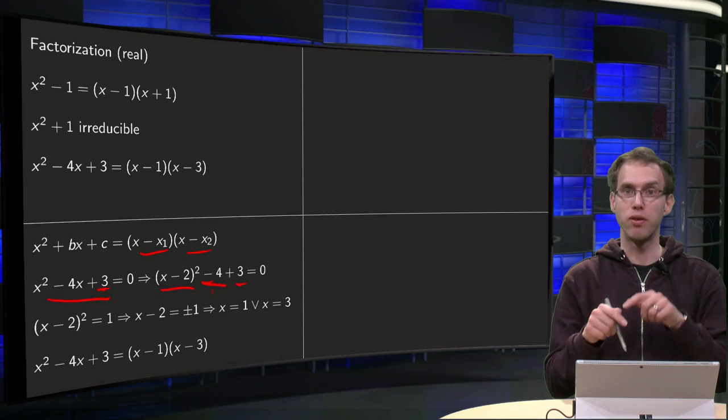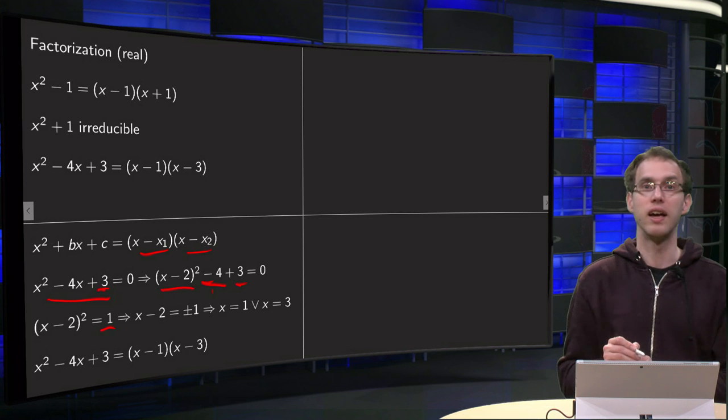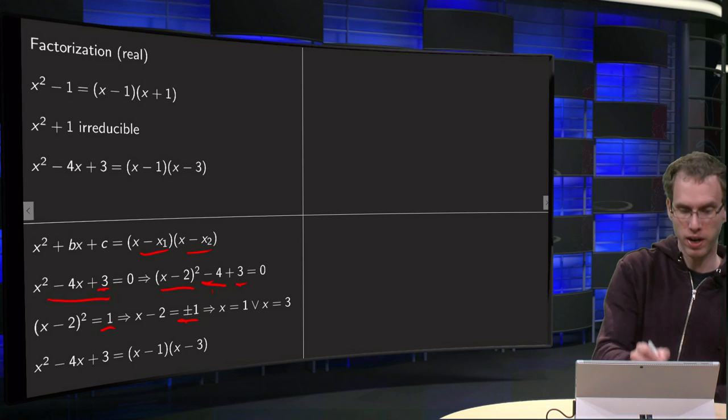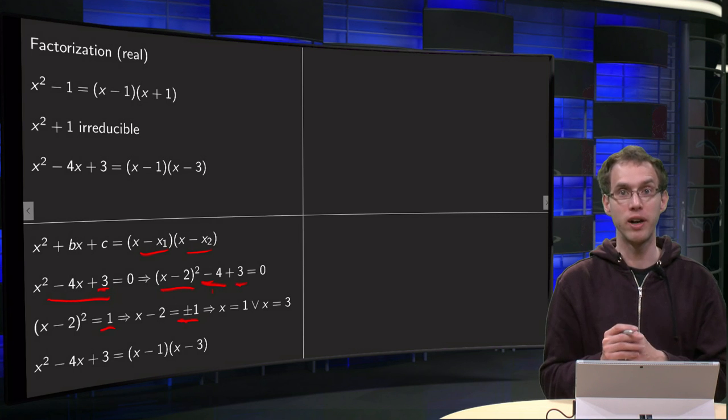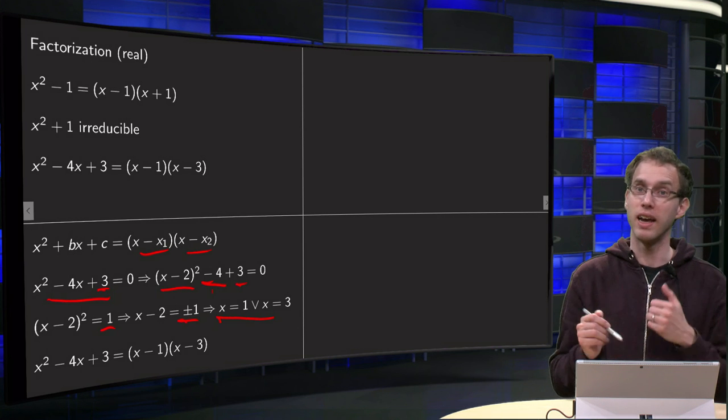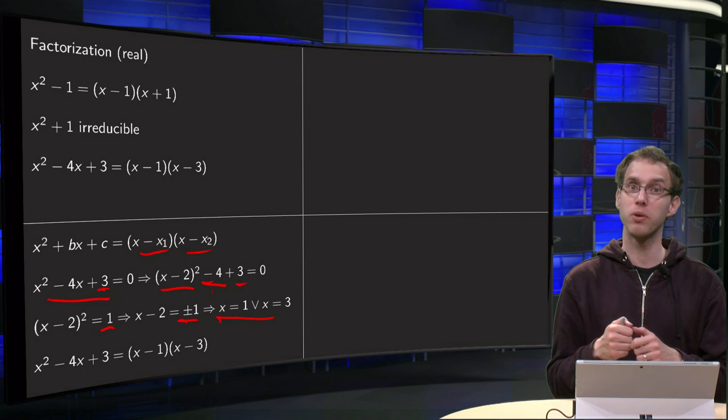So we bring the -4 + 3 to the other side, so 1 to the other side. (x - 2)² = 1, so x - 2 = ±1, so the solutions are x = 1 or x = 3. So my x₁ = 1 and my x₂ = 3, the two zeros of my polynomial.